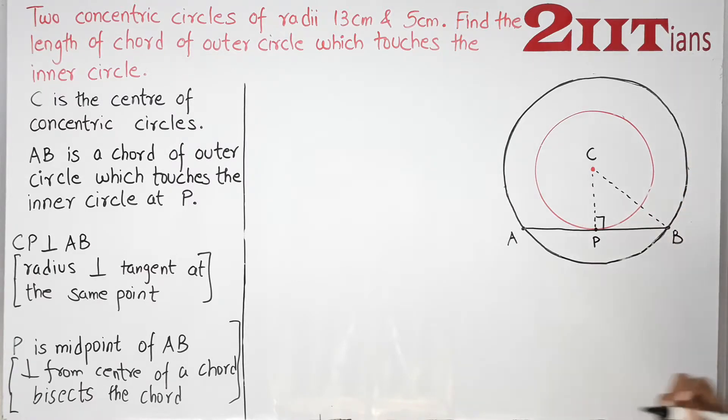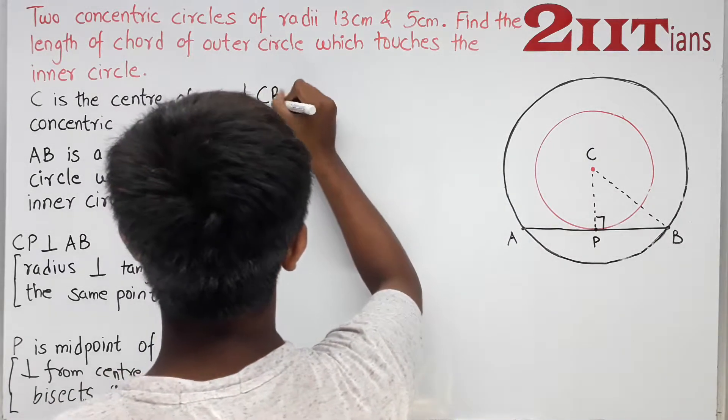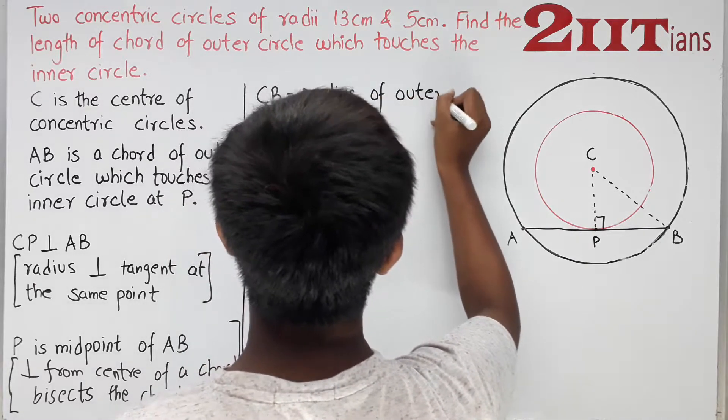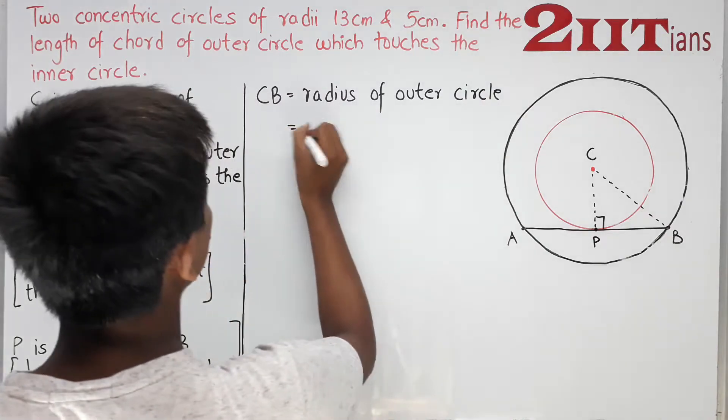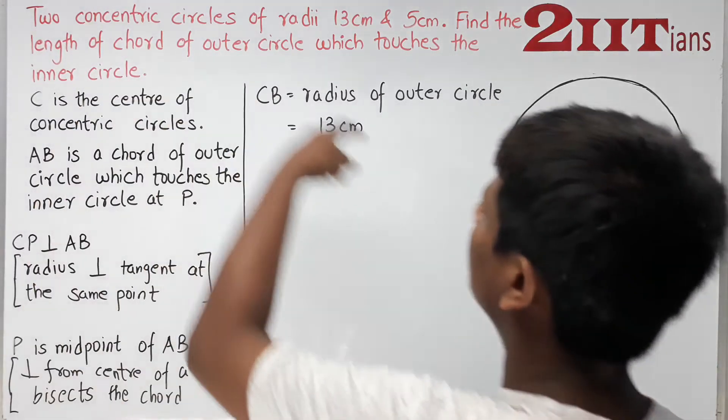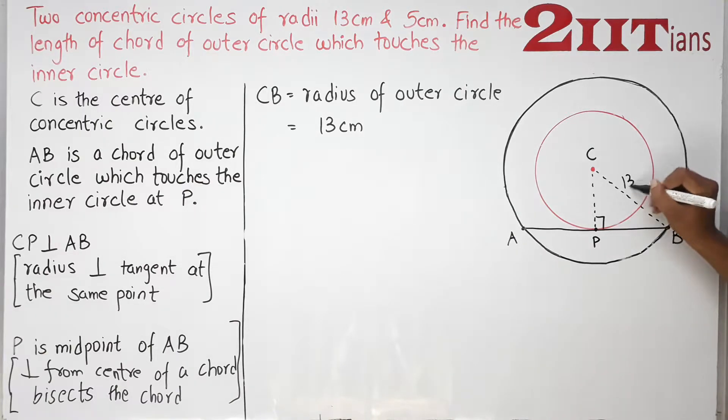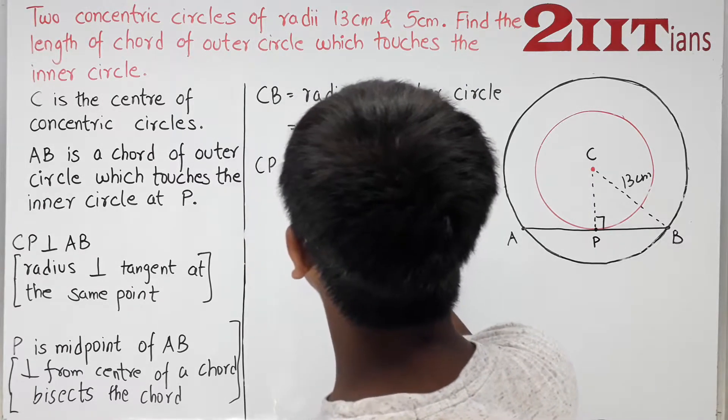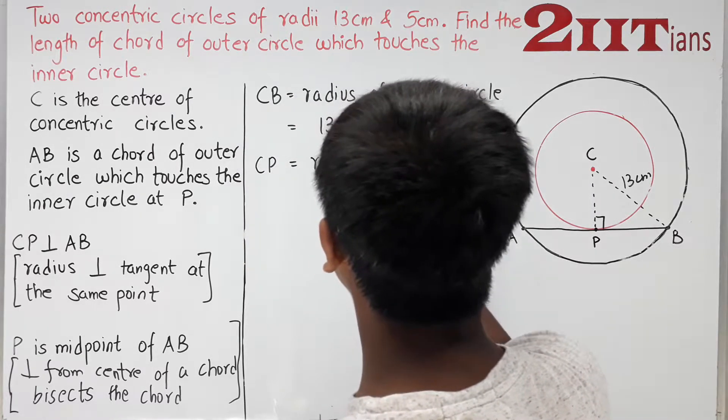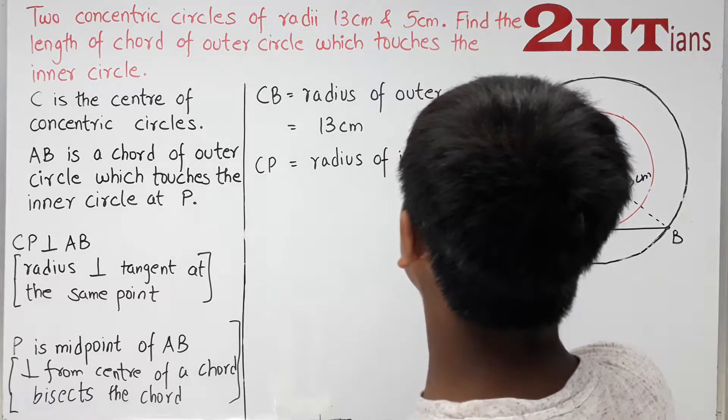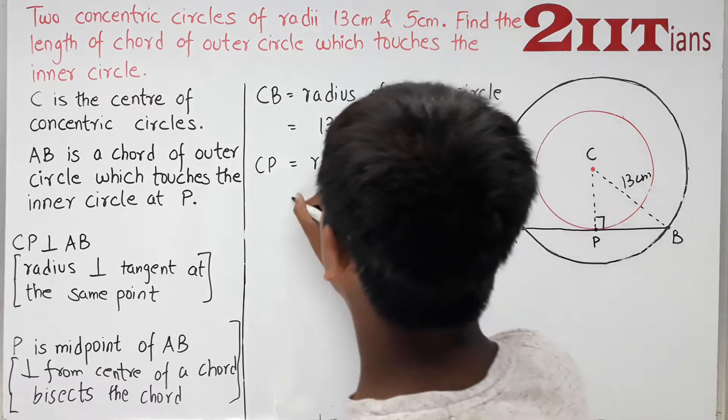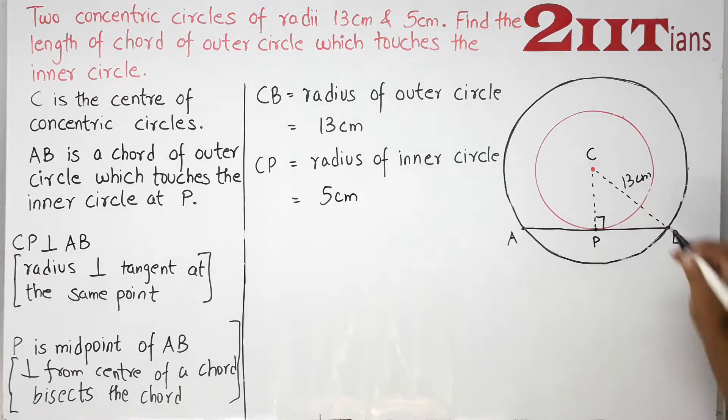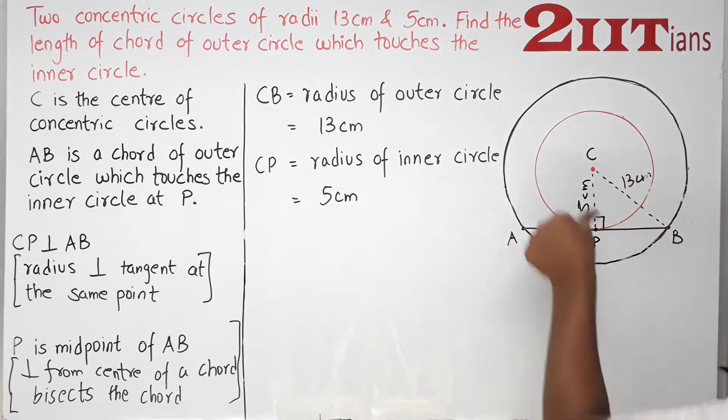We can write CB is equal to radius of outer circle, which is 13 cm. CP is equal to radius of inner circle, which is 5 cm.